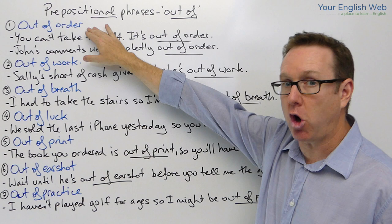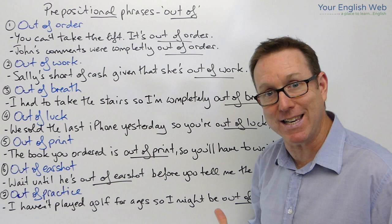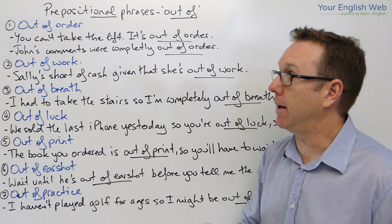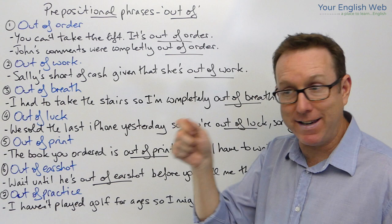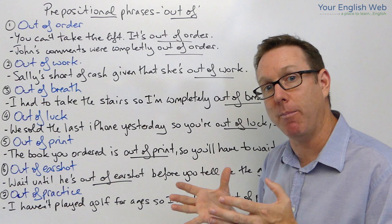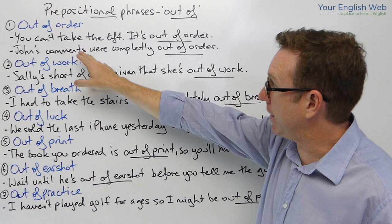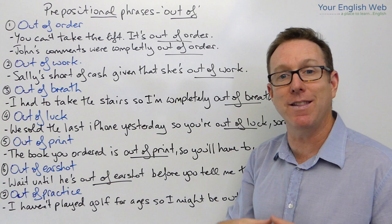Now the first one is a common one so you've probably used it before, or most likely you have seen it, which is 'out of order'. If something is out of order it means that it's not working. So this could be like a lift or an elevator, perhaps a vending machine, some other type of machine that is not working at that particular moment — you could put a sign that says 'out of order'.